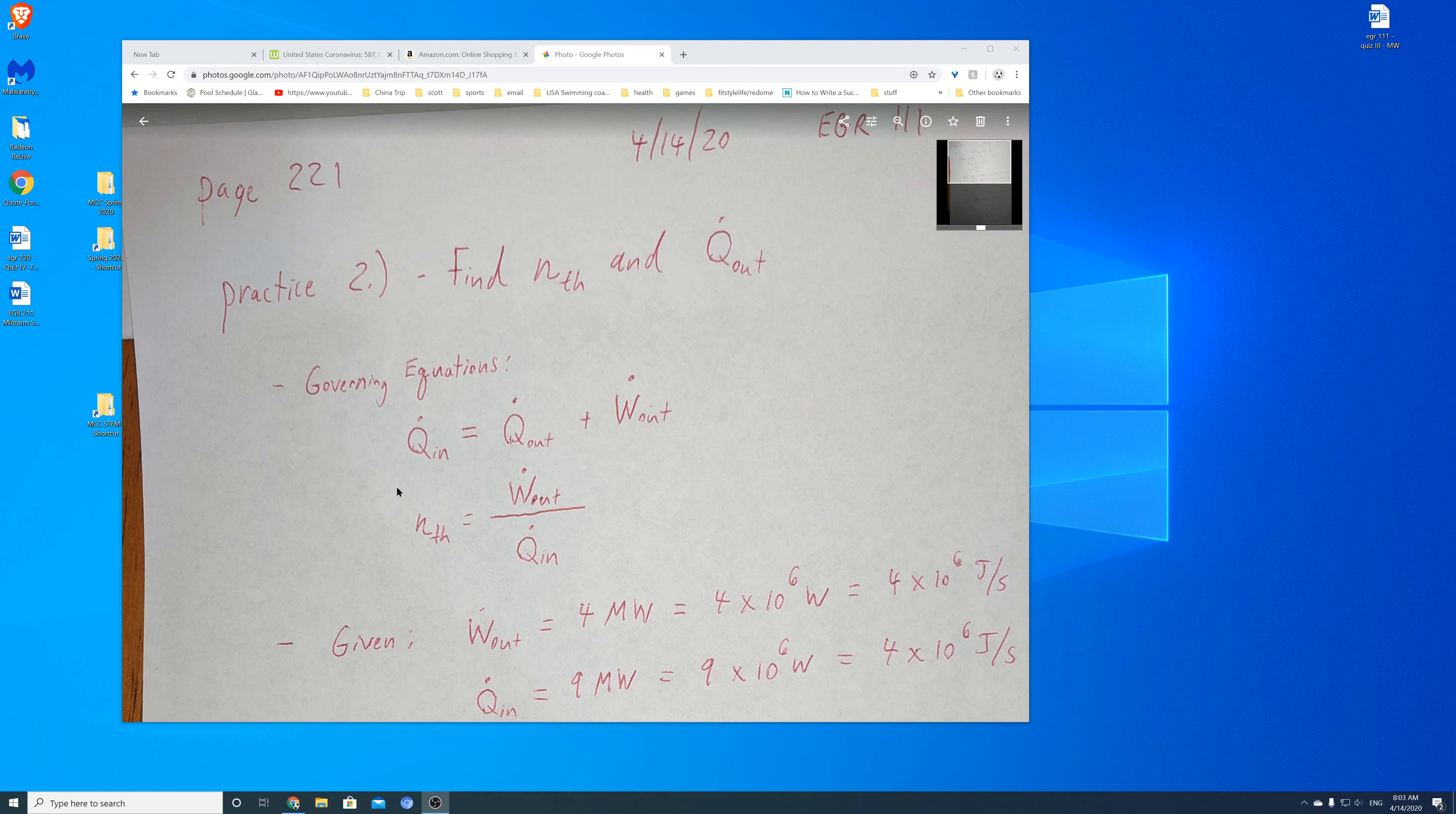Here are our two governing equations. The first is our first law of thermodynamics equation. Energy can't be created or destroyed; it can only be transferred from one form to another. In this case, we have a rate of energy coming in, which we account for on the left-hand side. On the right-hand side, we have the rate of heat going out and work out. These two together need to add up to whatever comes in, so we account for all the energy in the system.